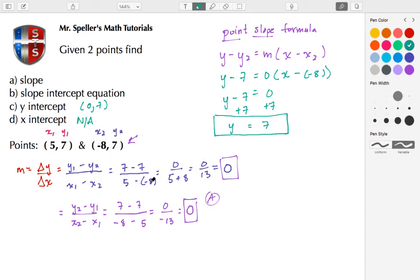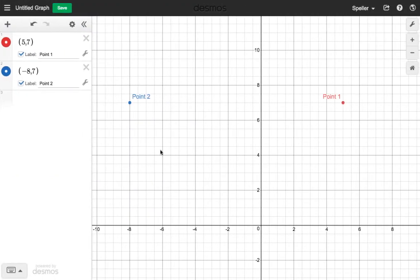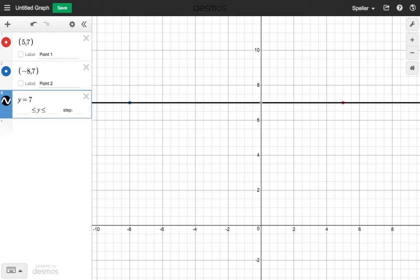take a look at this using Desmos. So here we have the two points: point one is (5, 7), point two is (-8, 7). Let's go ahead and just click on these so we can show those points. And we found that our equation is Y equals 7, and here